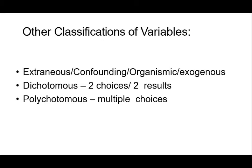Other classifications of variables include extraneous, confounding, organismic, or exogenous variables — these surround the other variables and are usually found in qualitative research. Dichotomous variables usually have two choices, for example gender: male and female. For polychotomous variables, we have multiple choices — like civil status: single, married, cohabitation, or widow.